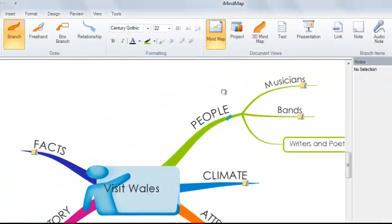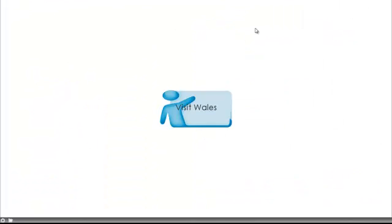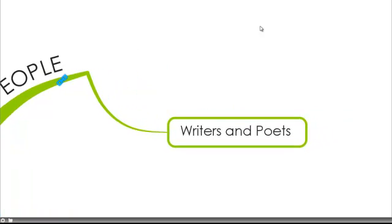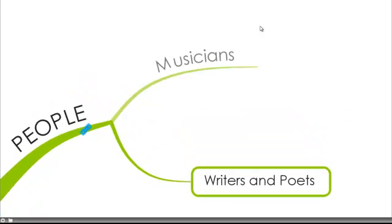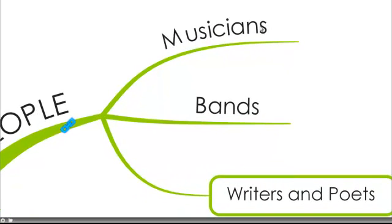To enter presentation view, it's very simple. In the Home tab on the ribbon toolbar, simply select Presentation View. As you can see on screen, I now have my presentation map in front of me. I'm simply going to use the left and right keys on my keyboard to animate my presentation. You'll notice that the presentation animates branch by branch and takes our audience on a journey, demonstrating the ideas I've placed on my map.